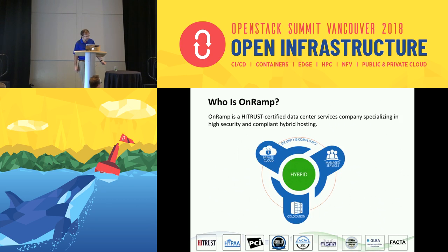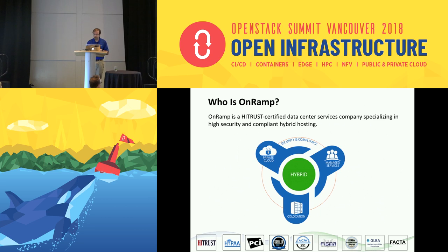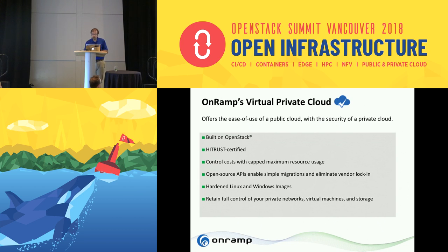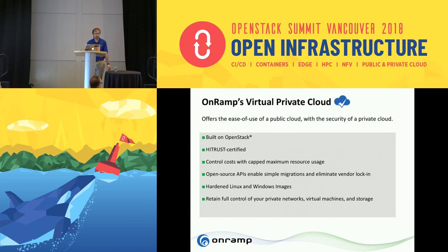A little bit about OnRamp. OnRamp is a high-trust certified data center services company based out of Austin, Texas. We have two data centers there and one in Raleigh, North Carolina — all world-class facilities with fully redundant network and power paths. Last year we released our virtual private cloud product built on OpenStack. In addition to the OpenStack API, we provide pre-hardened Linux and Windows images and usage-based billing to allow for burstable cloud workloads.